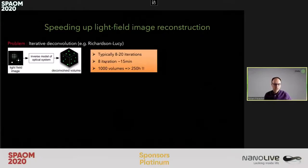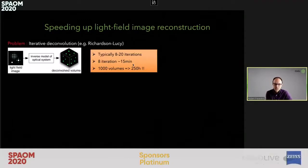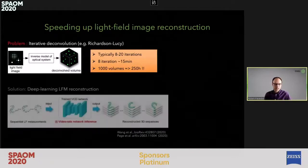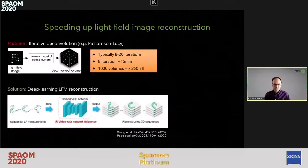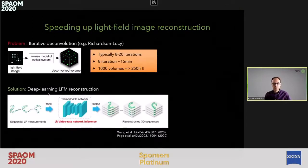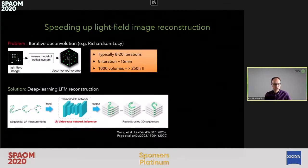If you then have thousands of volumes, you get many hundreds of hours of reconstruction just for a single video. With the introduction and rise of artificial intelligence and machine learning in microscopy, others have explored the use of neural networks and deep learning to directly learn this mapping from the light field image to the deconvolved volume. There were two very nice papers published earlier this year in which the networks were trained with high resolution images obtained on a separate microscope.